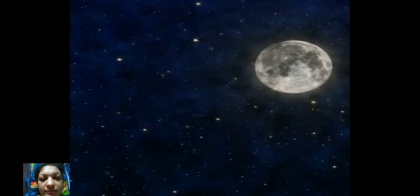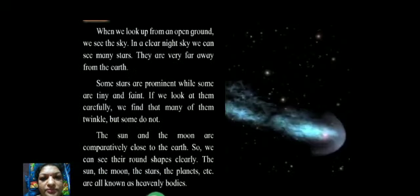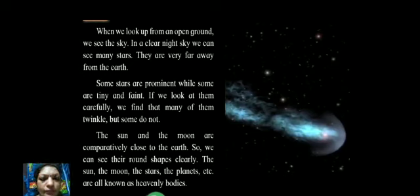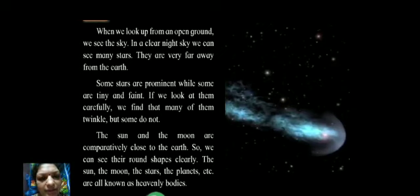There are innumerable stars which we cannot count. When we look up from an open ground, we see the sky. In a clear night sky we can see many stars; they are very far away from the earth. Some stars are prominent while some are tiny and faint, meaning we are not able to see them with the naked eye.